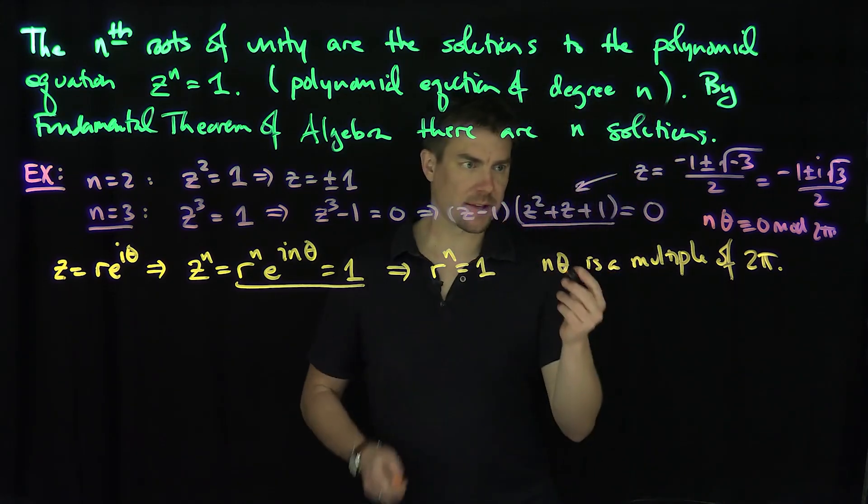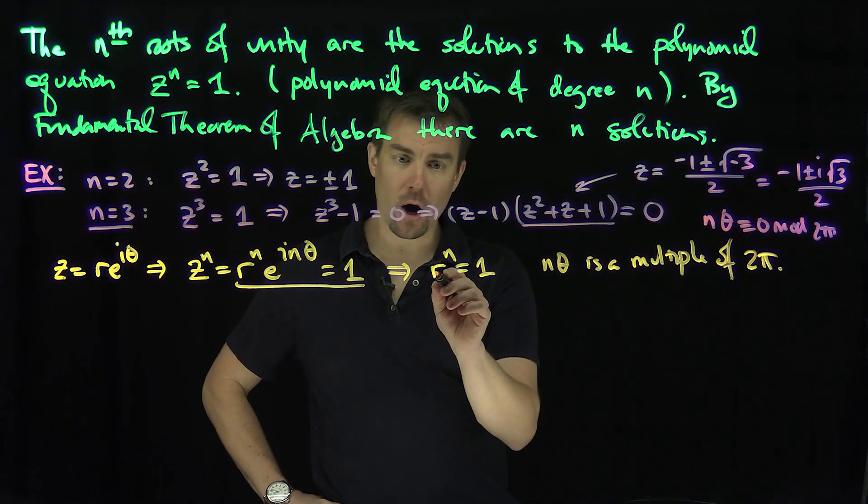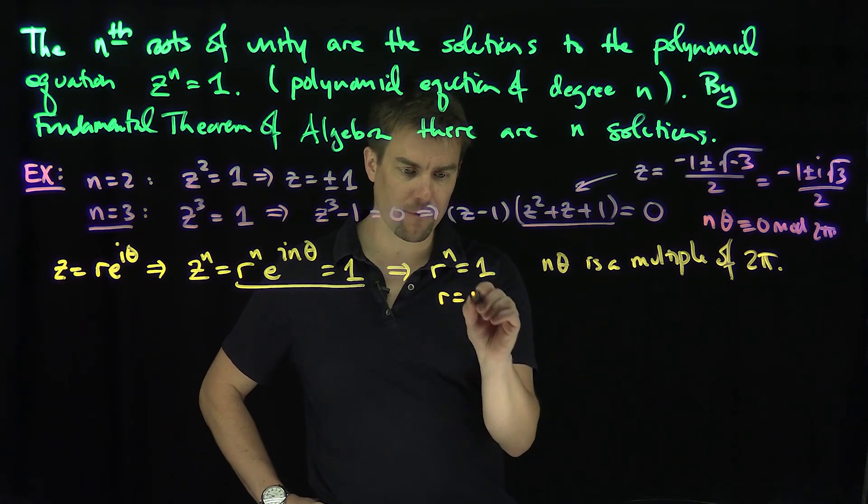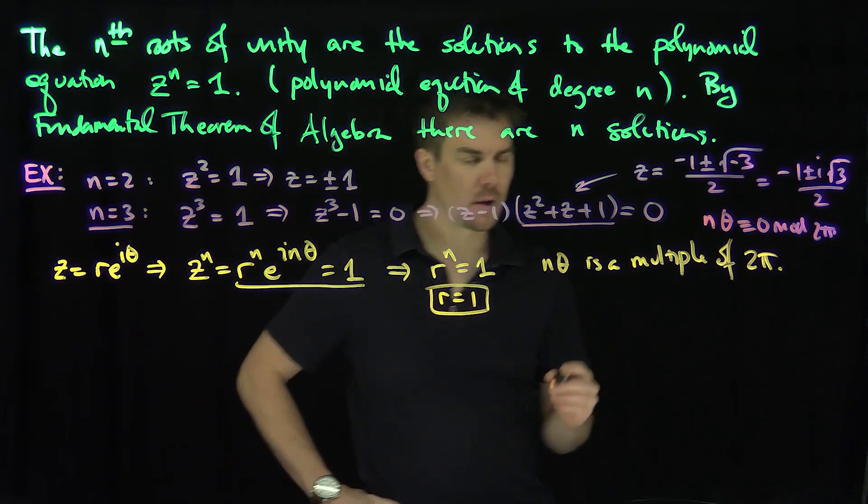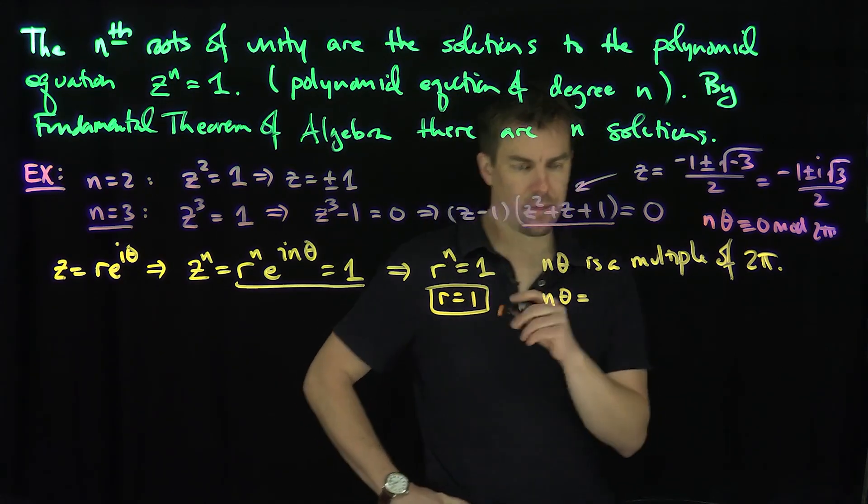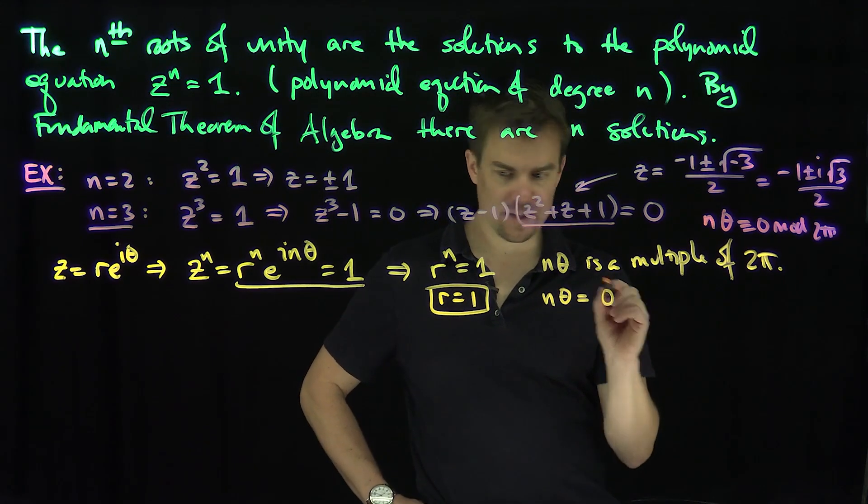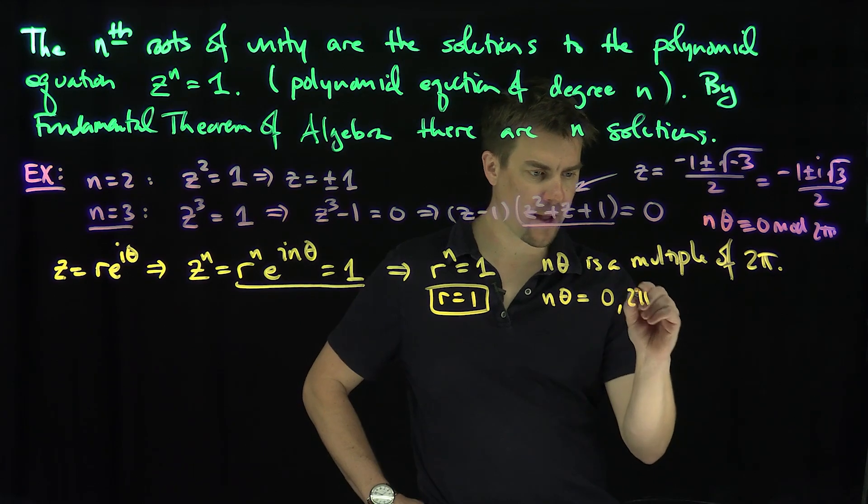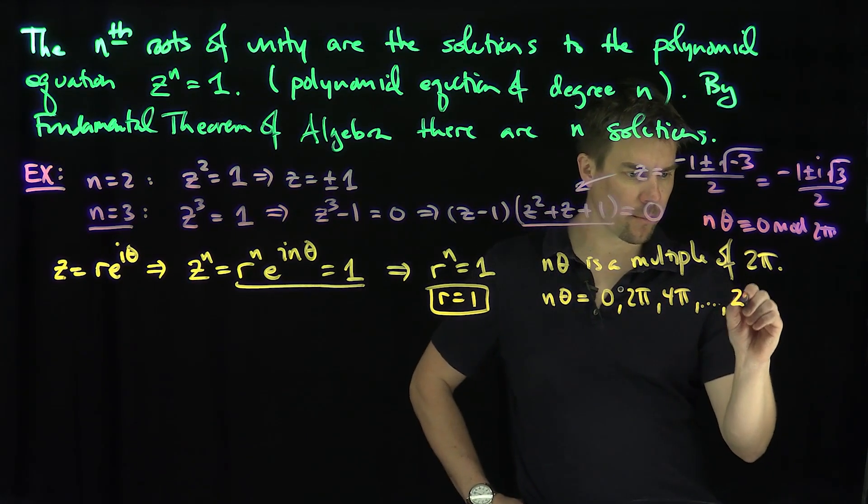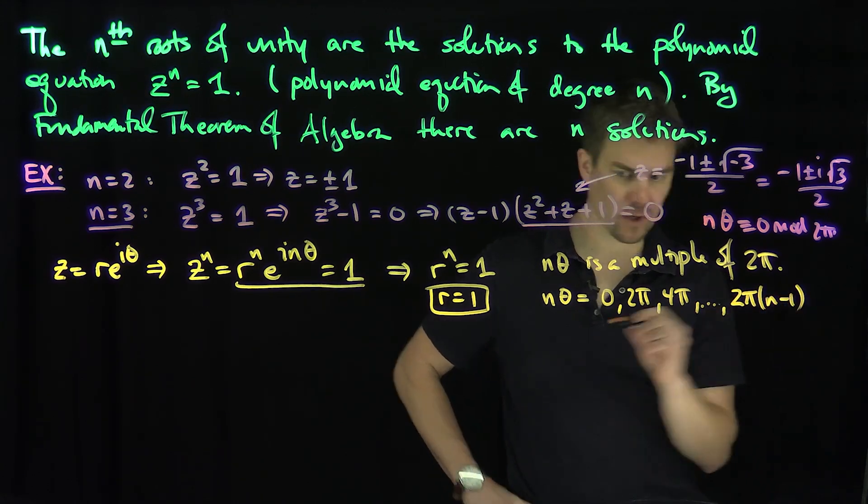So what can we say? This r is a real number, so the only real number solution to this is r equals 1. So r is going to be forced to be 1. And n theta is going to be equal to 0, or 2 pi, or 4 pi, and then we go all the way up to 2 pi times n minus 1.